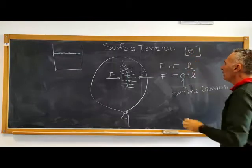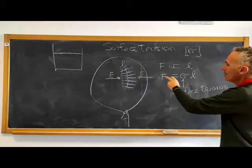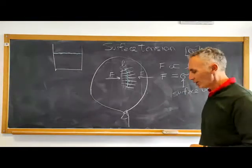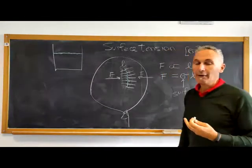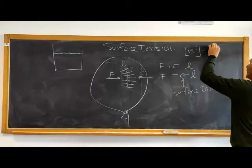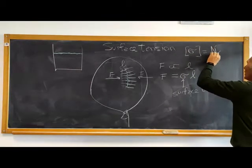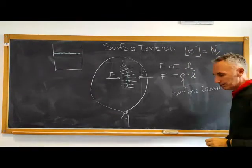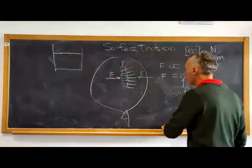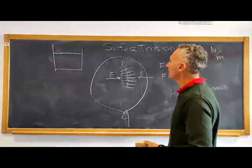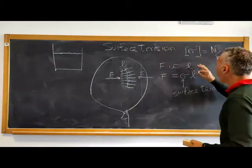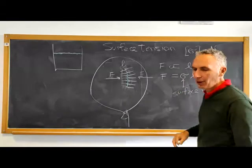What are the dimensions of sigma? Since this is a force and L is a length, sigma must have dimensions of force per unit length. In the international system this would be newton per meter. Following the same path as for other variables, this is what we observe from our continuum world.